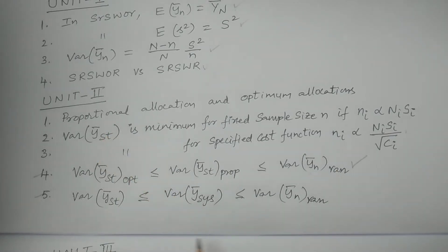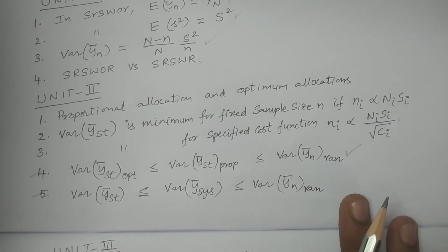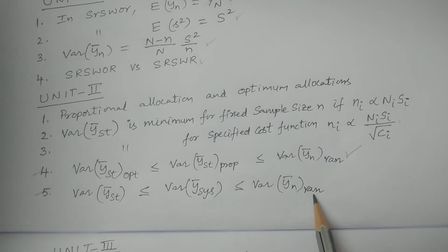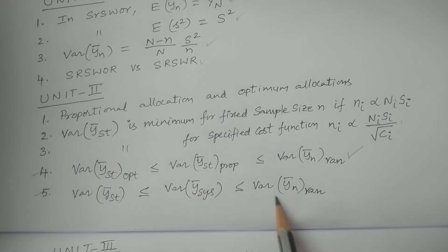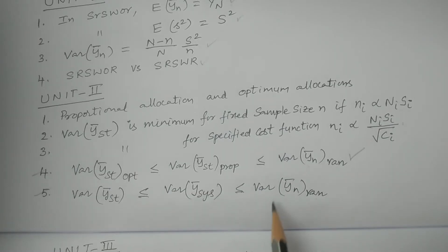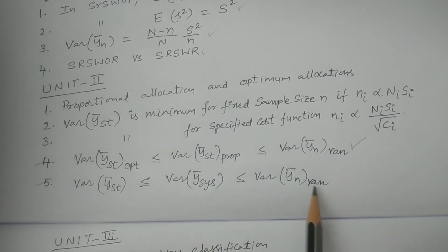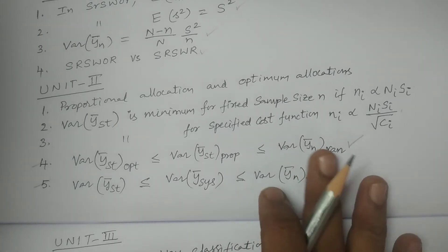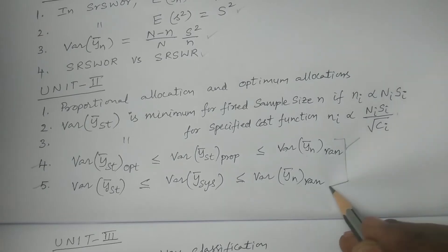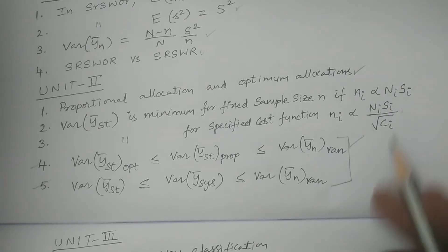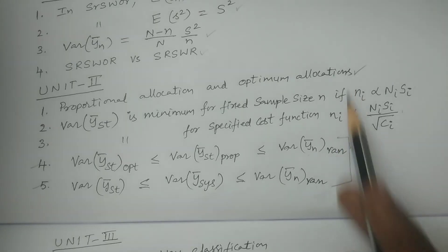In Unit 2, the techniques covered are stratified random sampling and systematic sampling. For a linear trend, show that: variance of Y-bar-ST ≤ variance of Y-bar-systematic ≤ variance of Y-bar-random. This result holds when the linear trend condition is satisfied. This comparison of 3 variances is a key question for this unit — it is compulsory and depends on the 3-way question theory.